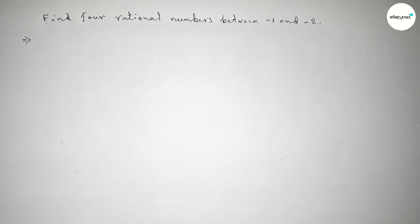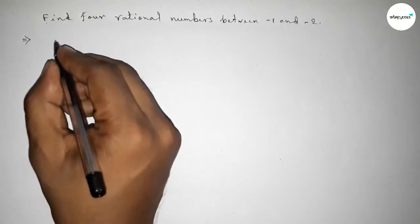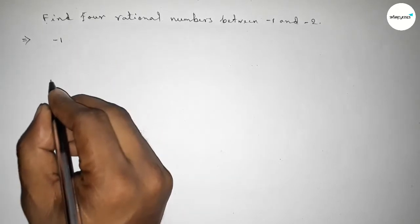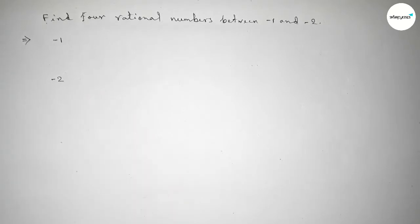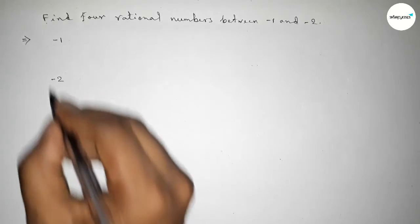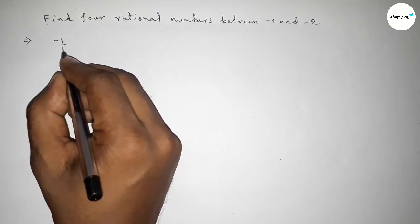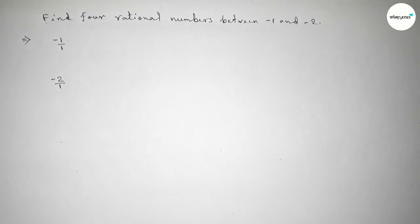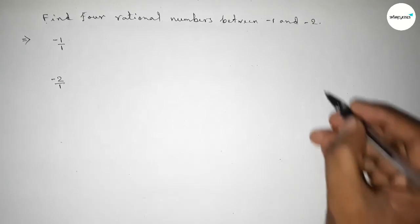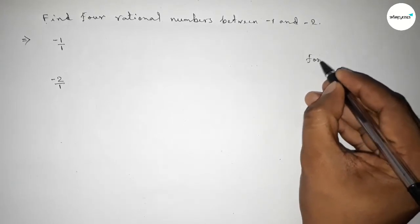First, marking here the implies sign. The given numbers are -1 and -2. Next, we can write -1 as -1/1 and -2 as -2/1. Now, for four rational numbers between any two numbers, we have to follow this method.